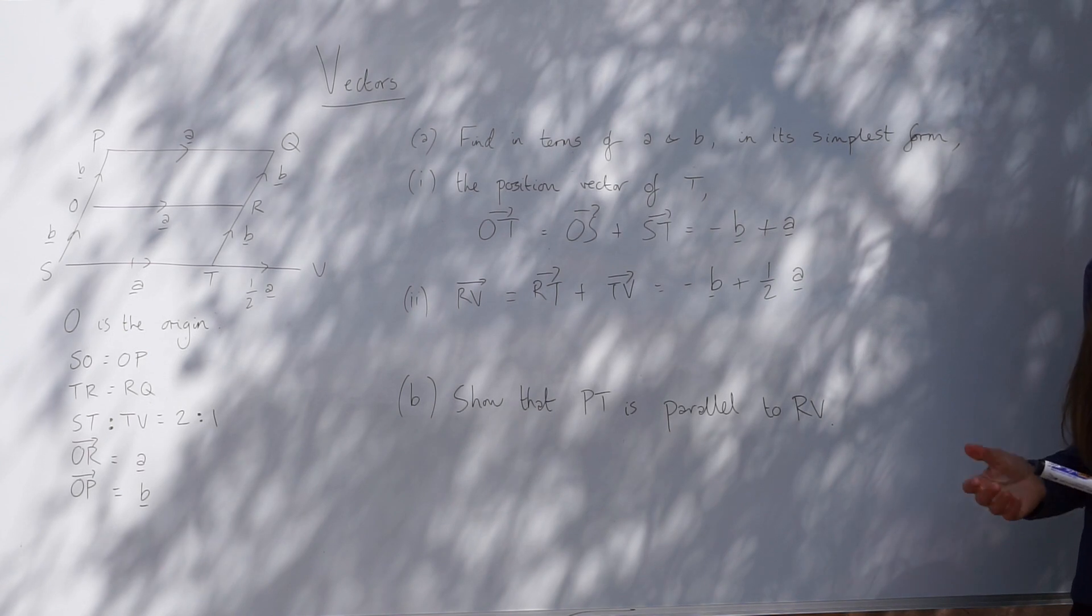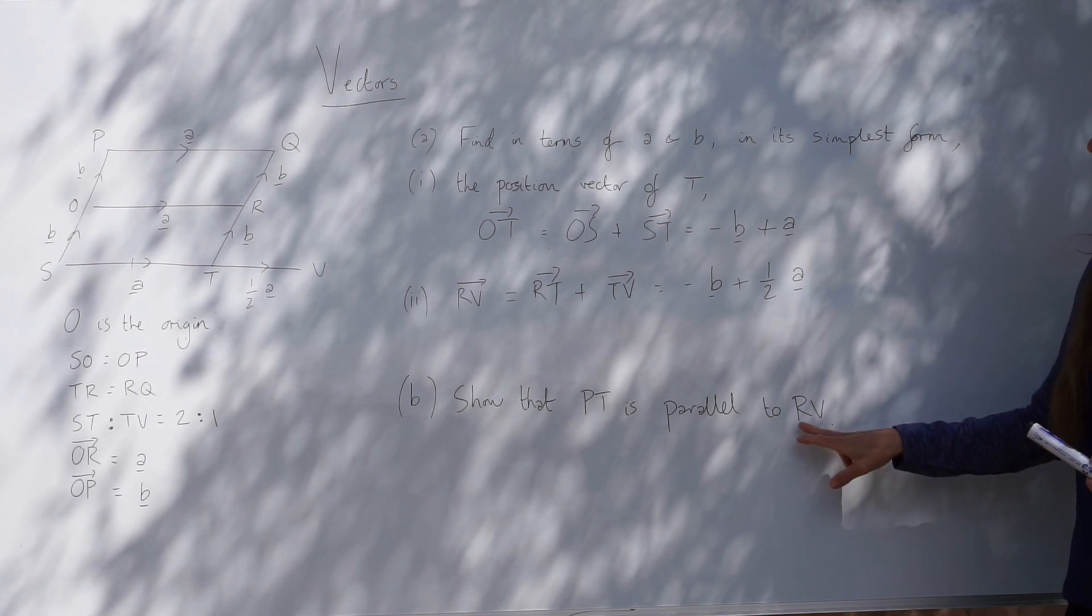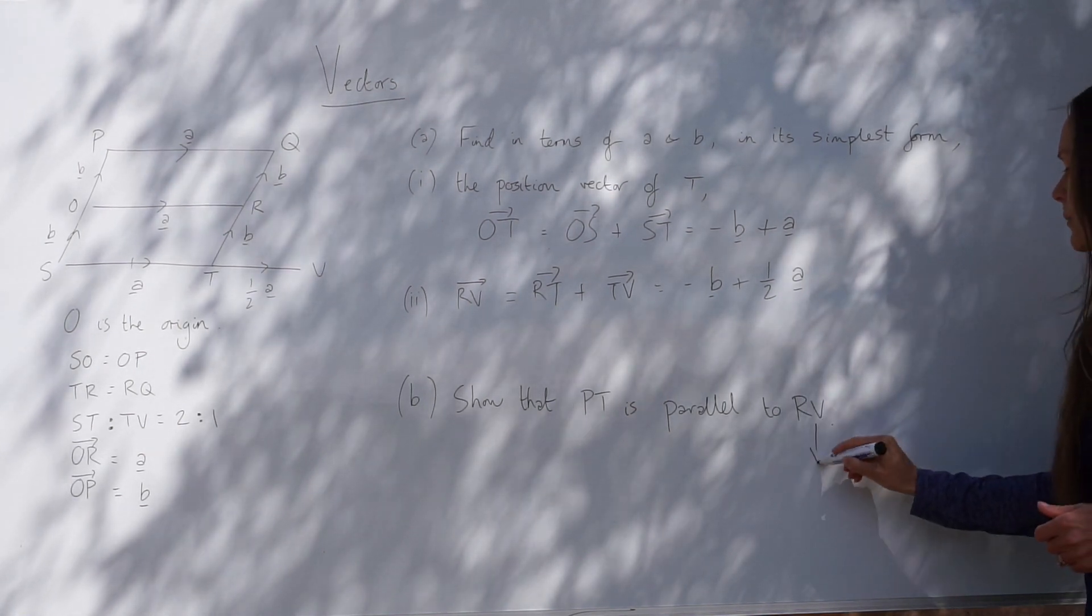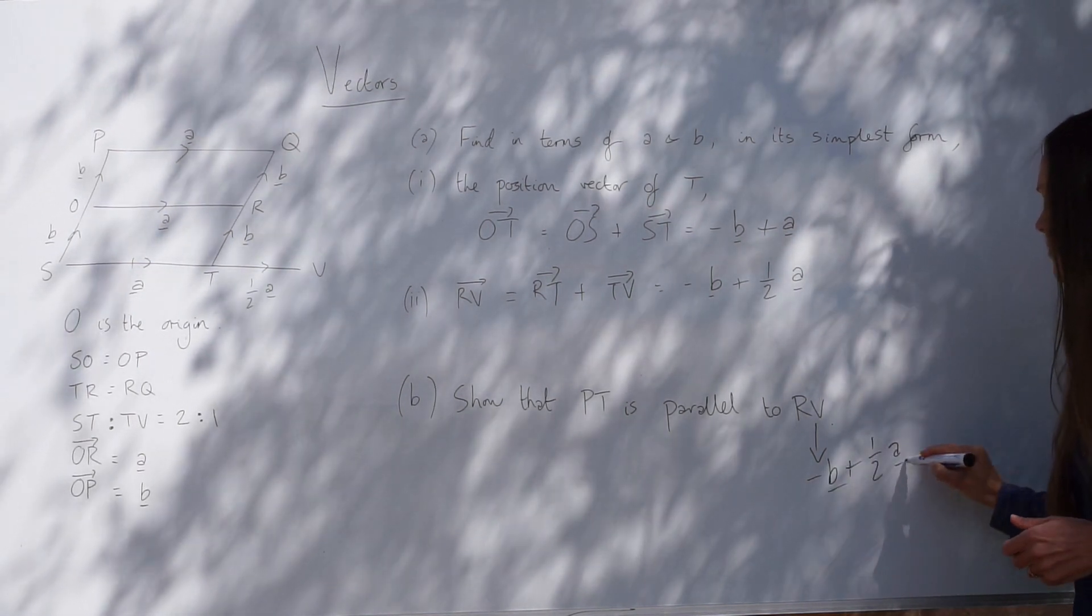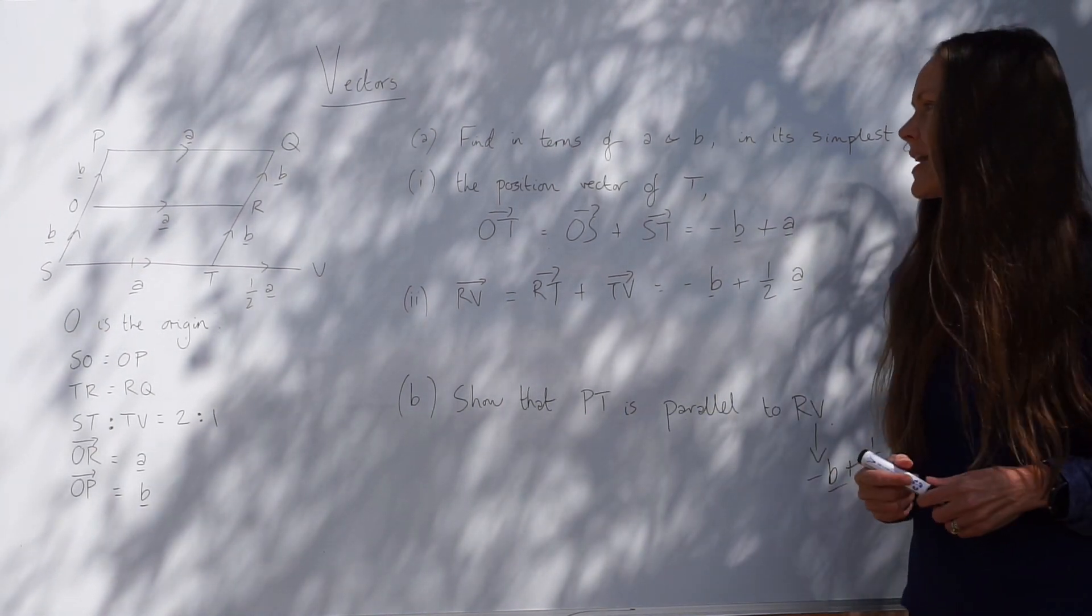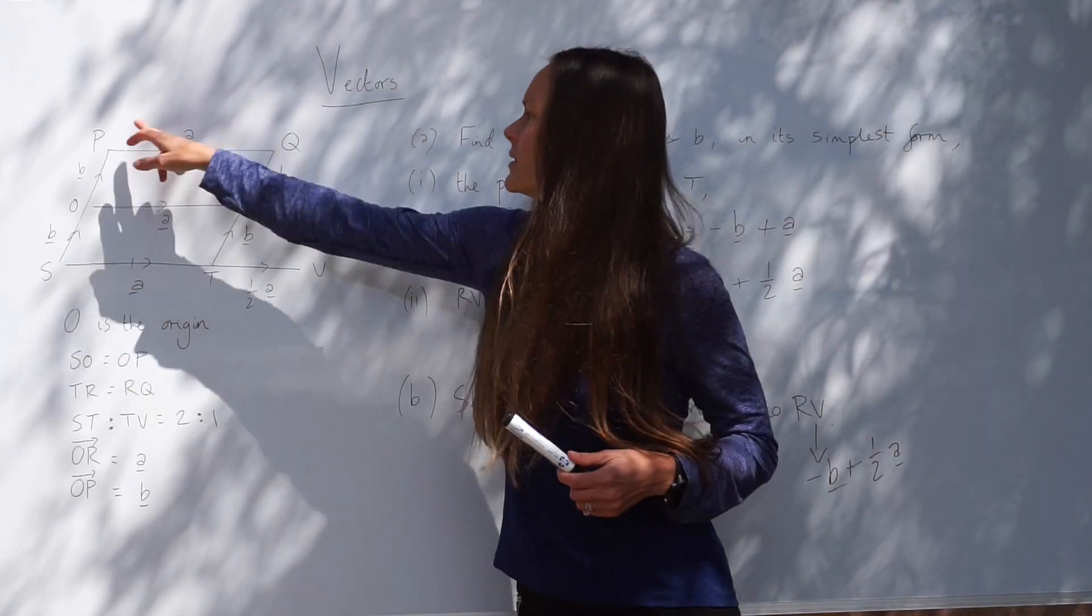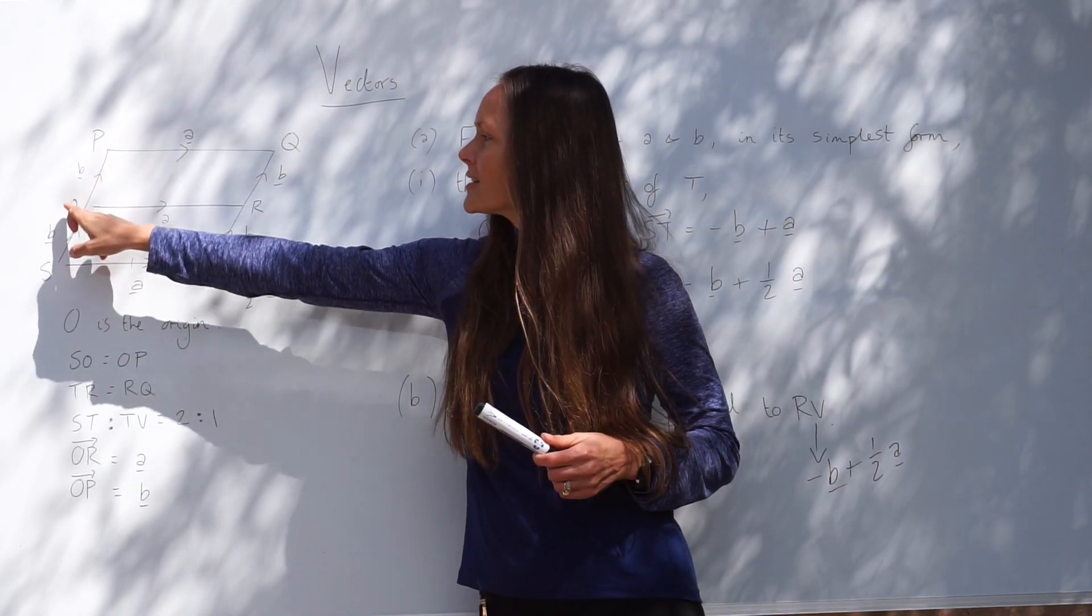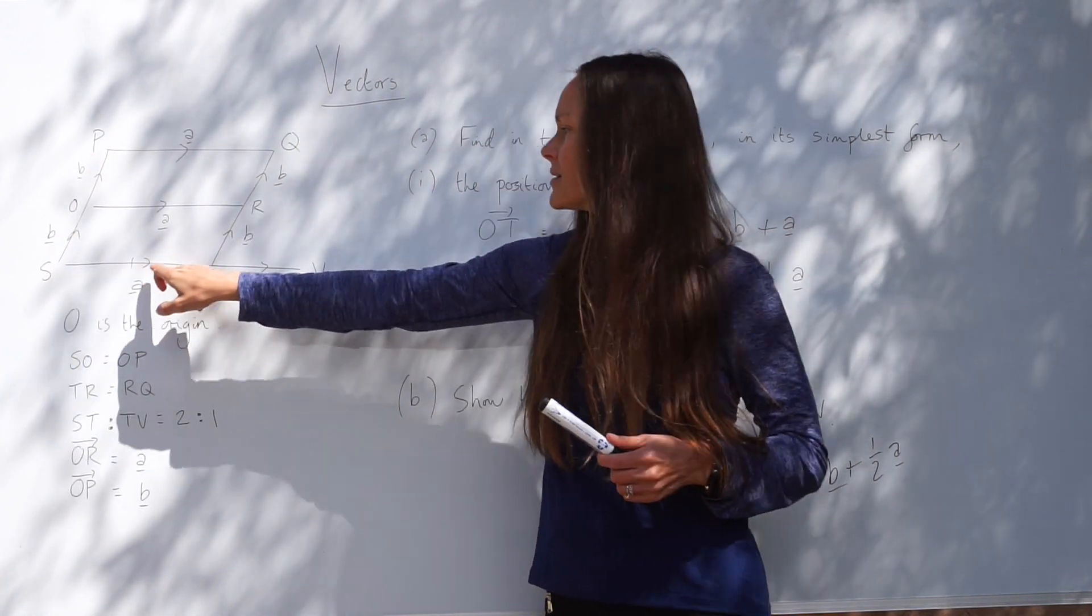Now, in part B, it says, show that PT is parallel to RV. Well, RV we just worked out up here. It was minus B plus a half A. But we haven't worked out PT anywhere in the question, so I'm going to work that part out next, so I can compare the two. So remember, it doesn't matter if you travel this way or this way to get from P to T. I'm going to travel along this side first. So I'm going to do PS and then plus ST.